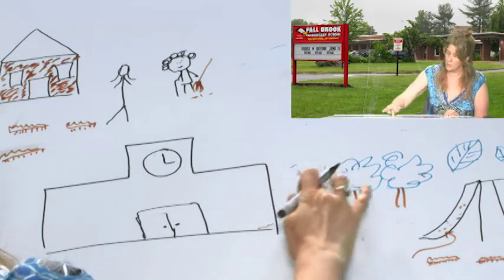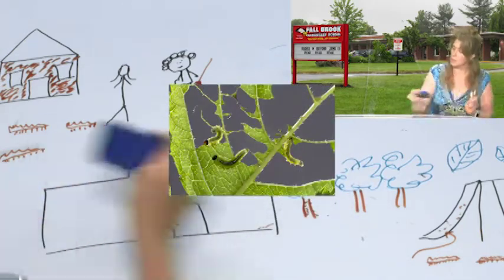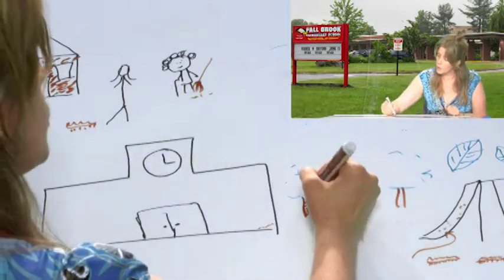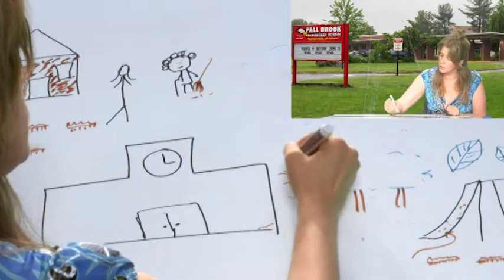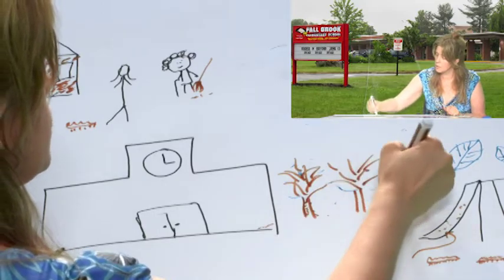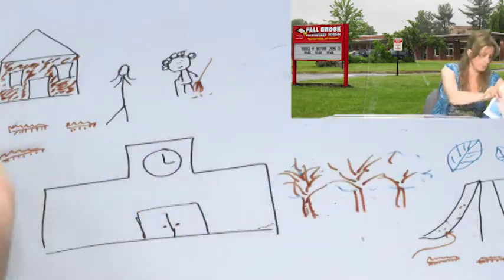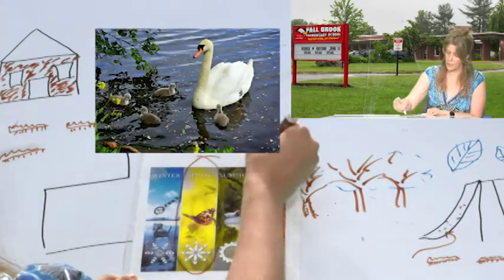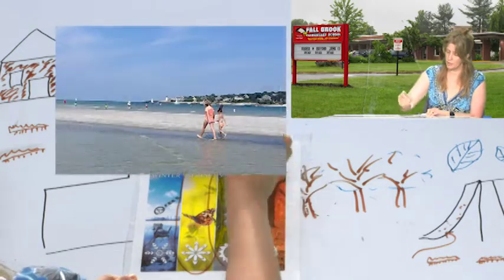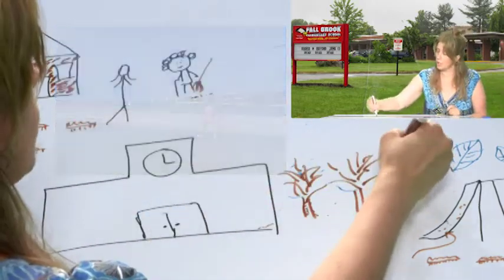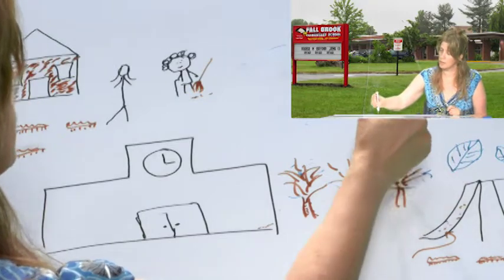So then the trees would have no leaves. This happened in the springtime and in the summer. We lost all of our leaves.